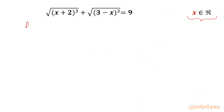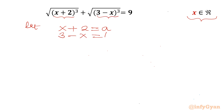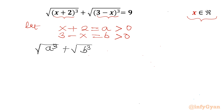Let's get started with our substitution. I will consider the bracket (x+2) equal to a, and the bracket (3-x) equal to b. The condition on a and b is that they should always be greater than 0 — positive — for real solutions. Now I will write our original equation as: √(a³) + √(b³) = 9.